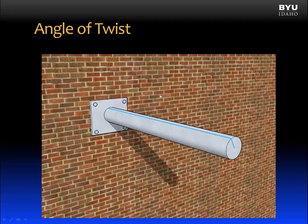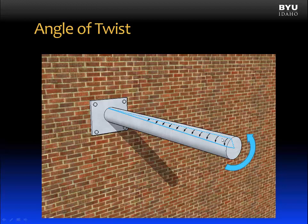Previously, we noted that if we were to draw a line on a shaft and then load it with a torsional load, it would produce deformation as shown in the figure. We see that the end of the shaft undergoes a rotation. And we're going to call that rotation the angle of twist, and we give it the Greek symbol phi.